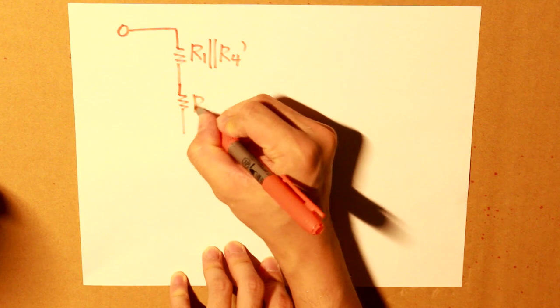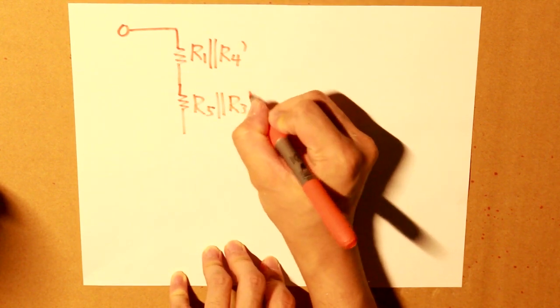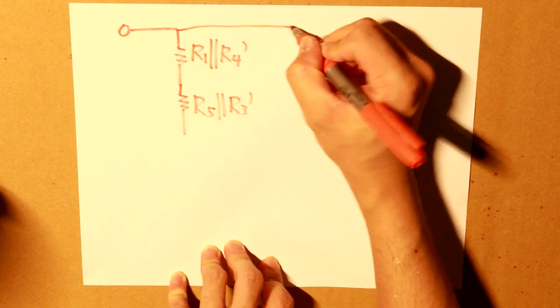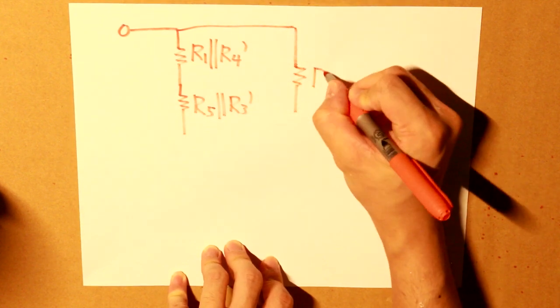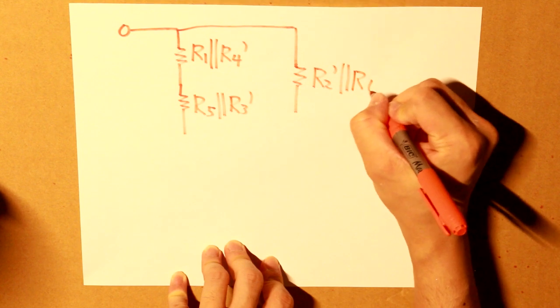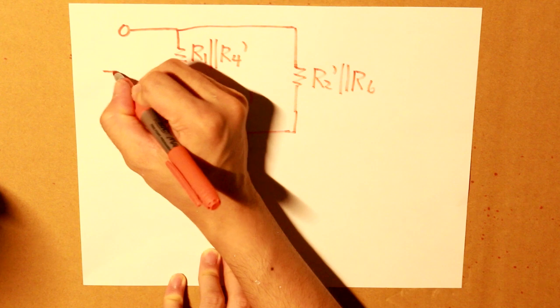So our combined resistor here would be R1 in parallel with the new formation of R4 apostrophe. A resistor down here would be R5 in parallel with R3 apostrophe. And then our resistor here will be R2 apostrophe in parallel with R6. And there we have it, that's our equivalent resistance.